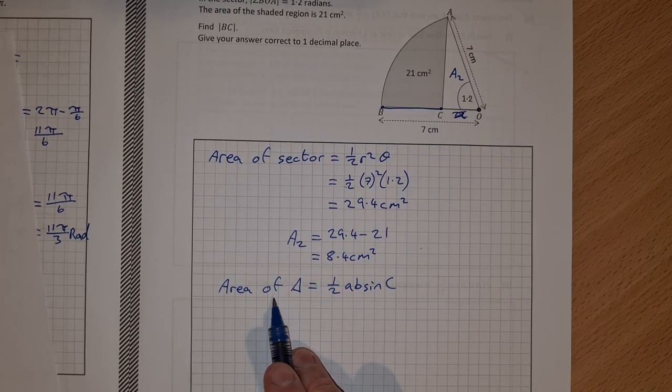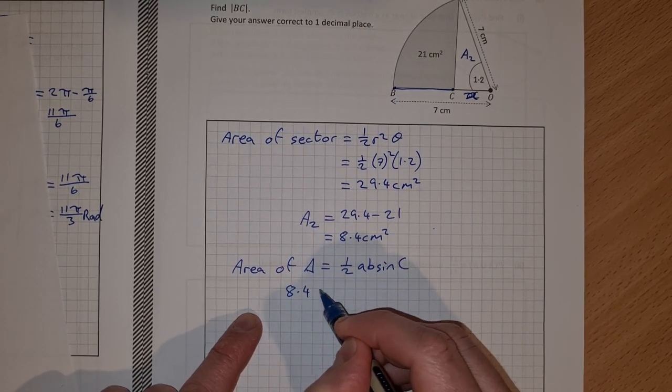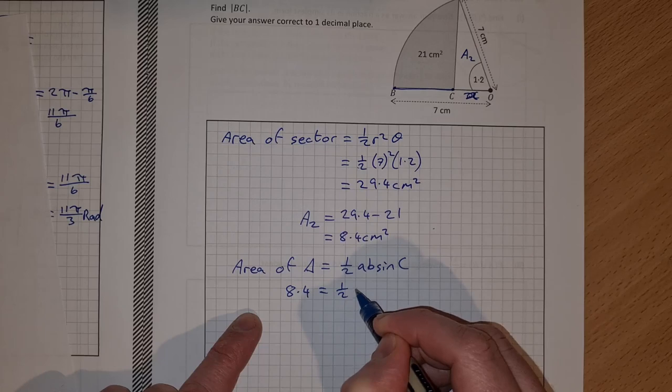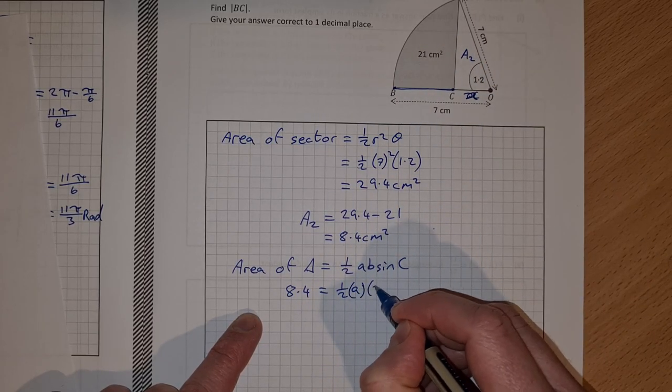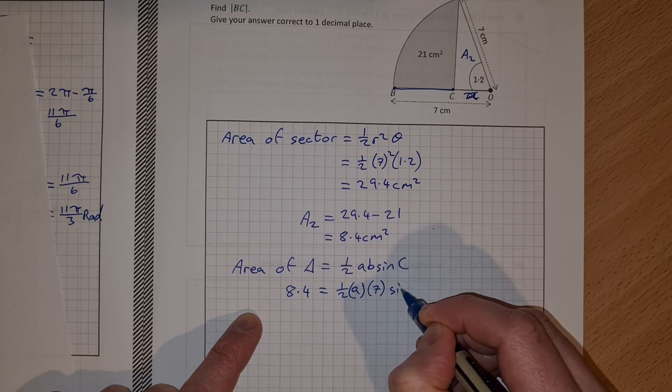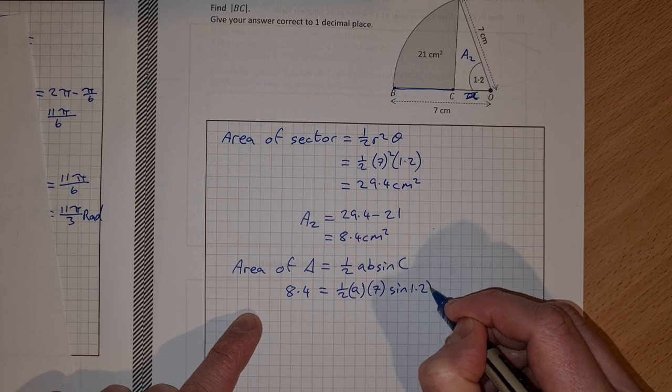So the area of the triangle is 8.4. So 8.4 is equal to half A by 7 by sine of C. It's sine of 1.2. And again, that's in radians.